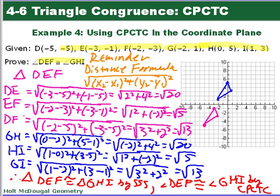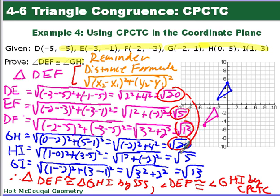I drew the two triangles: DEF is the pink triangle and GHI is the blue one. I took each of the sides and used the distance formula — plugging in X1, X2, Y1, Y2 — to get the side lengths for both triangles. All three pairs of sides are the same length, so the triangles are congruent by Side-Side-Side. Since the triangles are congruent, those corresponding angles are congruent by CPCTC.